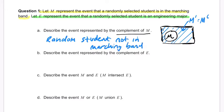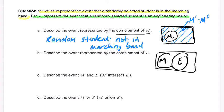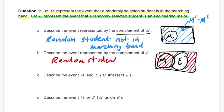Describe the event represented by the complement of E. Using our Venn diagram again, there's everything that can happen, here is M — students in marching band — and E, those who are engineering majors. We know there's some overlap because this is a follow-up to a previous problem. The complement of E is everything that is not E. You can see that includes some of M, but not the intersection where M and E meet. So it's a random student that is not an engineering major — all students who are not engineering majors.